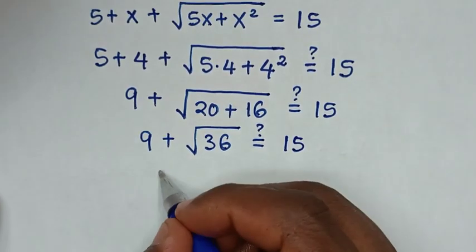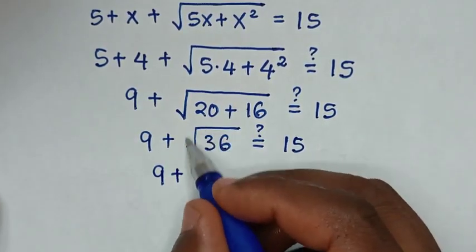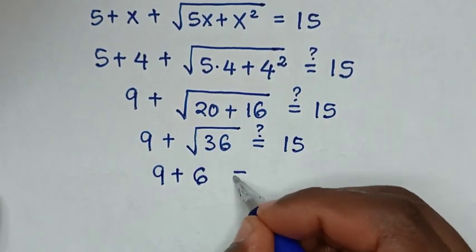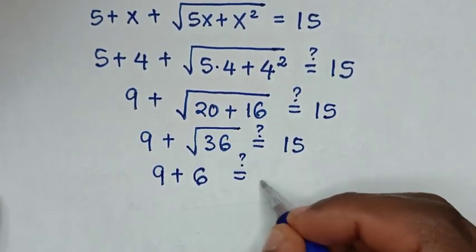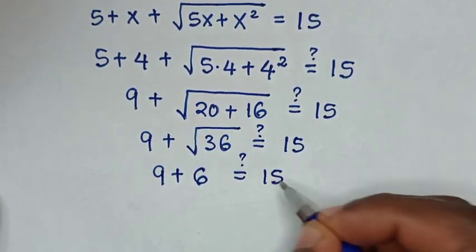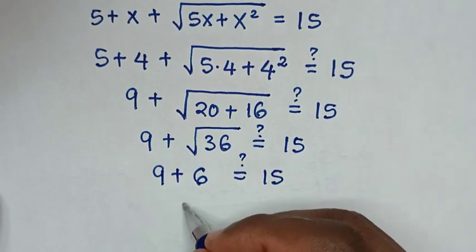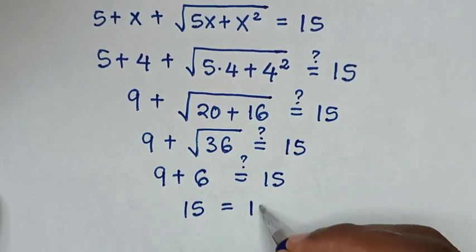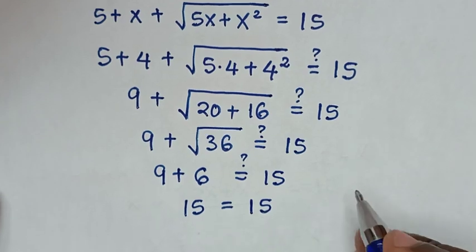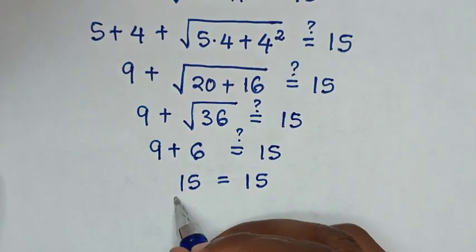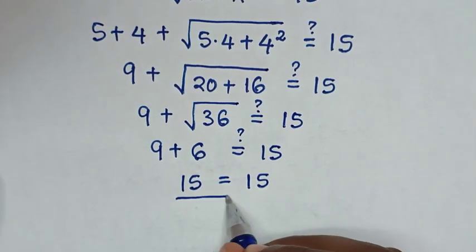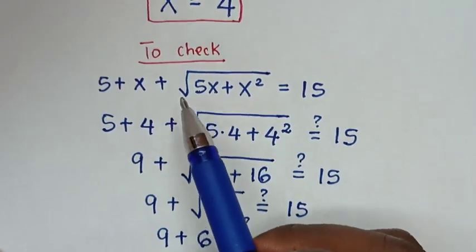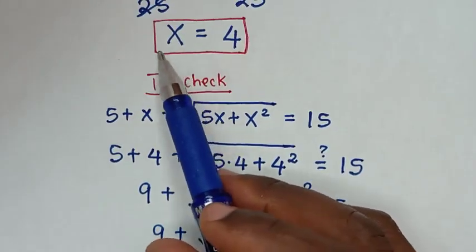Then it will be 9 plus square root of 36, which is 6, is it equal to 15? Then 9 plus 6 is 15, which equals 15. Therefore, since left side and right side are equal, it is true that x is equal to 4.